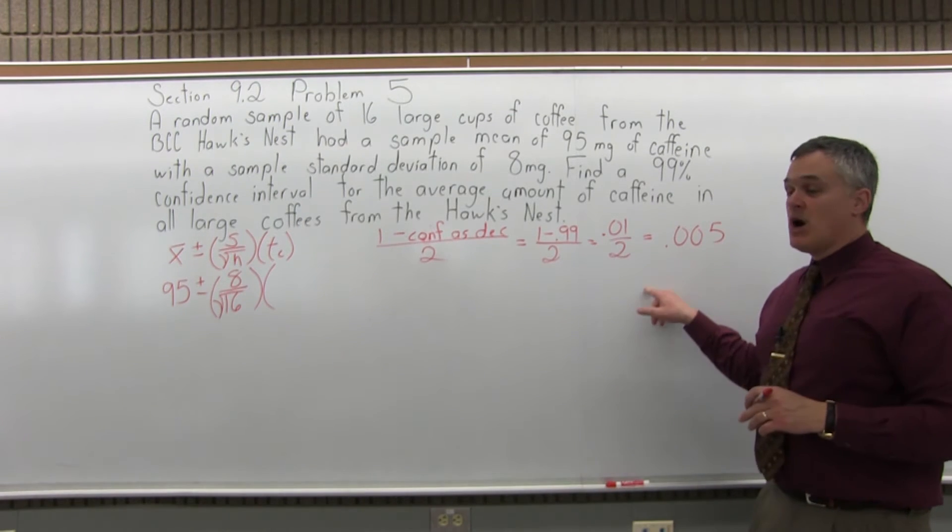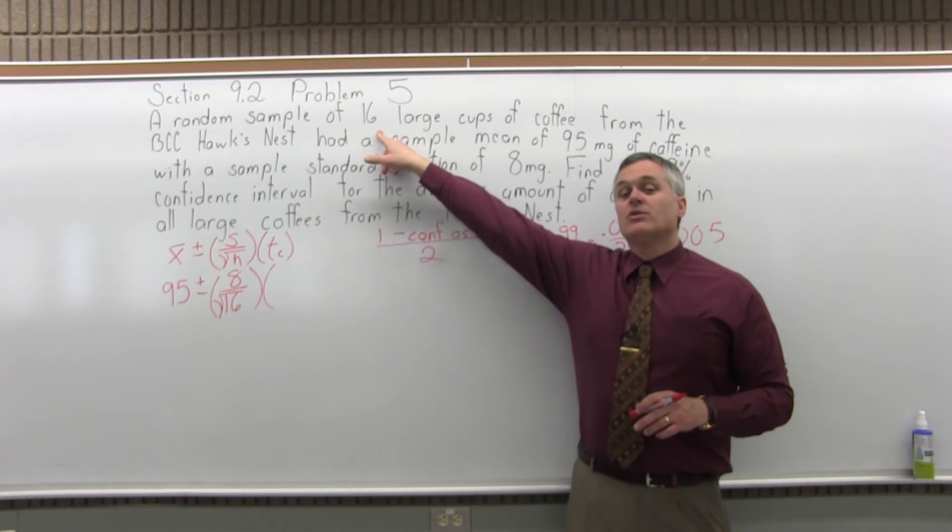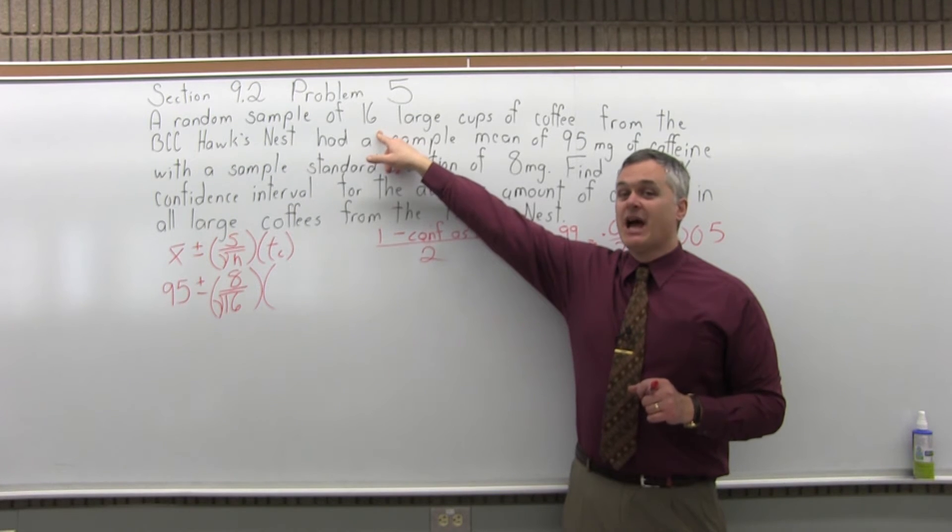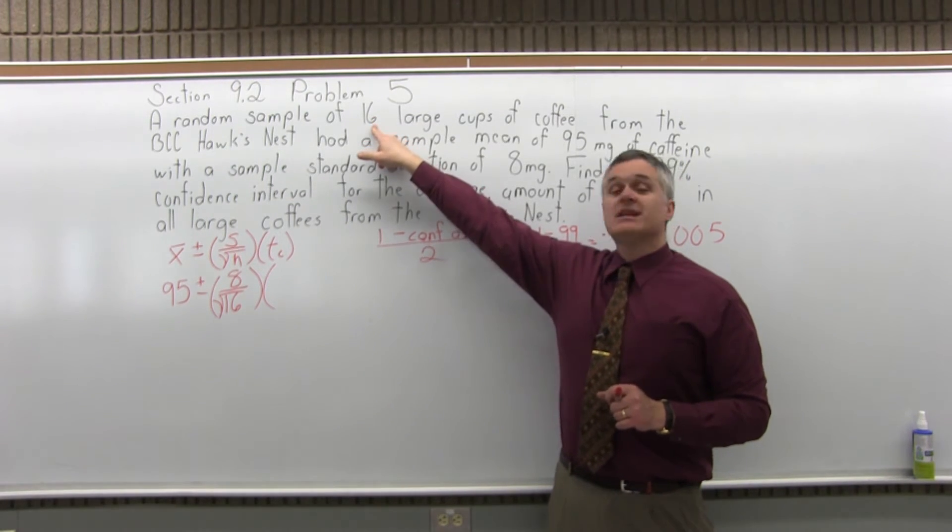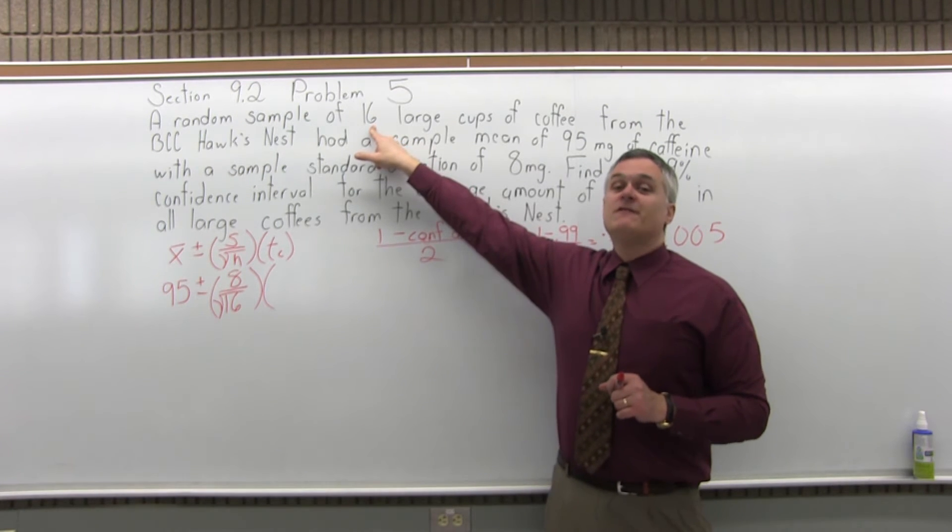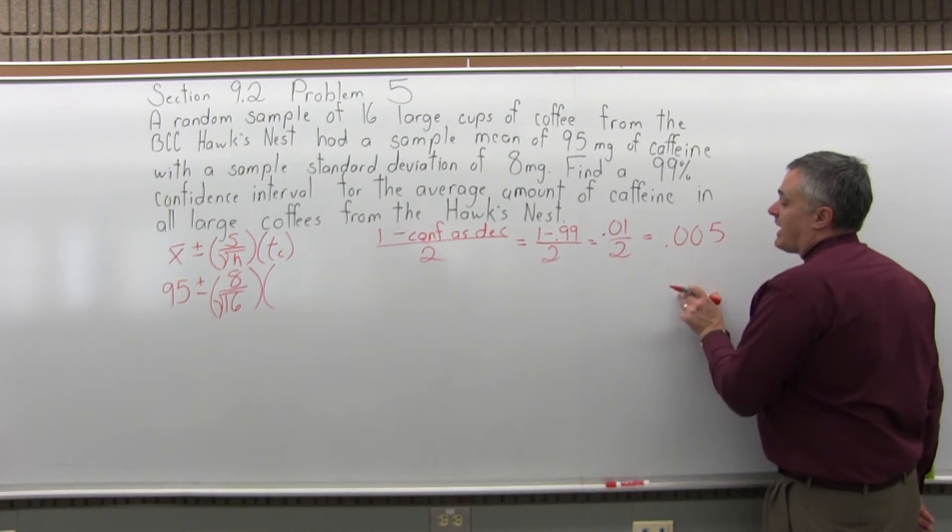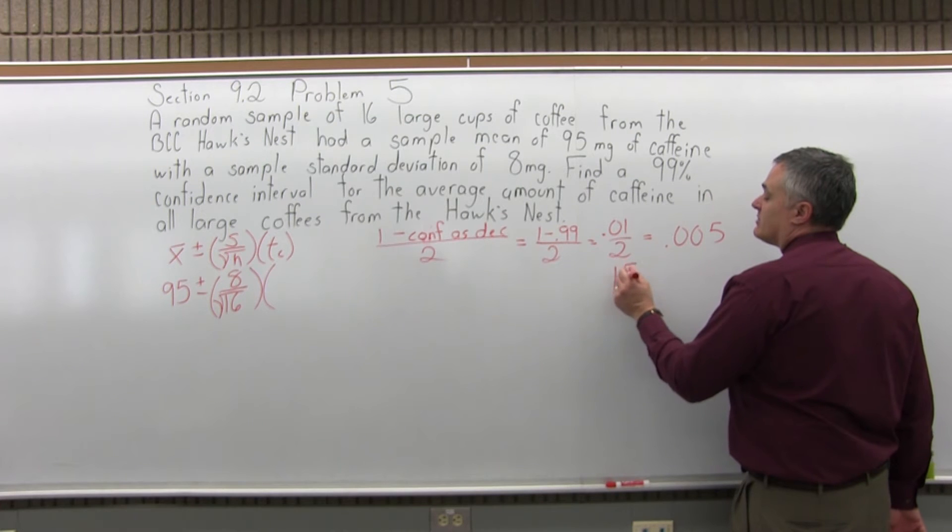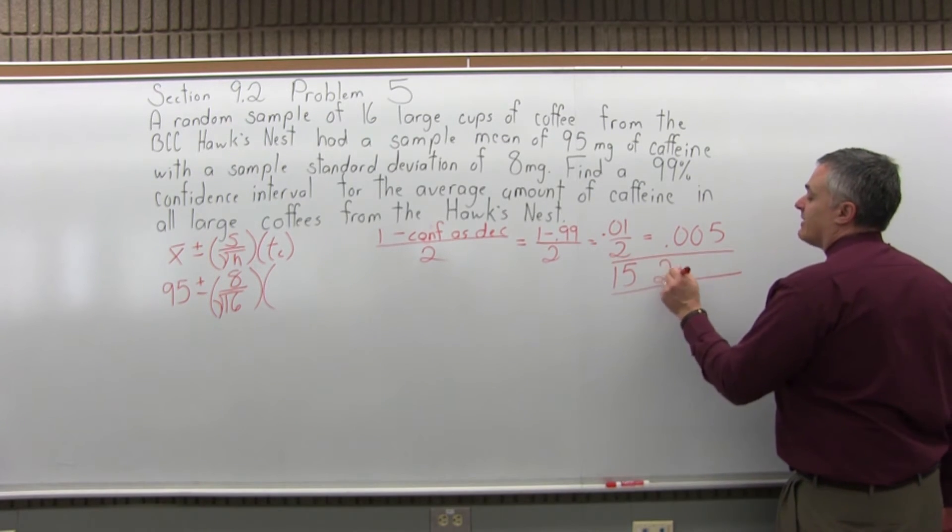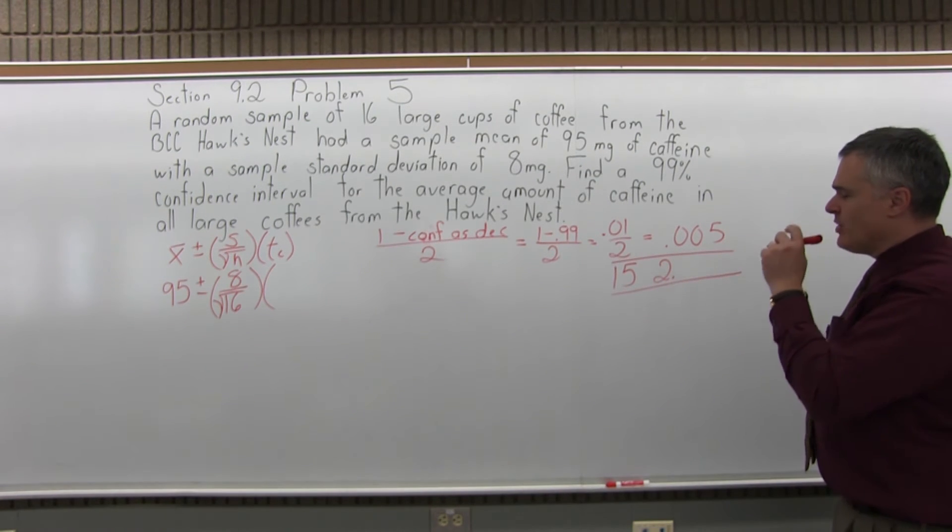So now the row is determined by the size of the sample. The row you look in is one less than the size of the sample. It's labeled df for degrees of freedom. So if our sample size is 16, our degrees of freedom would be 15. So you will look in the 0.005 column, see where it intersects with the 15 degrees of freedom row. And you will find that those two intersect at a value of 2.947.